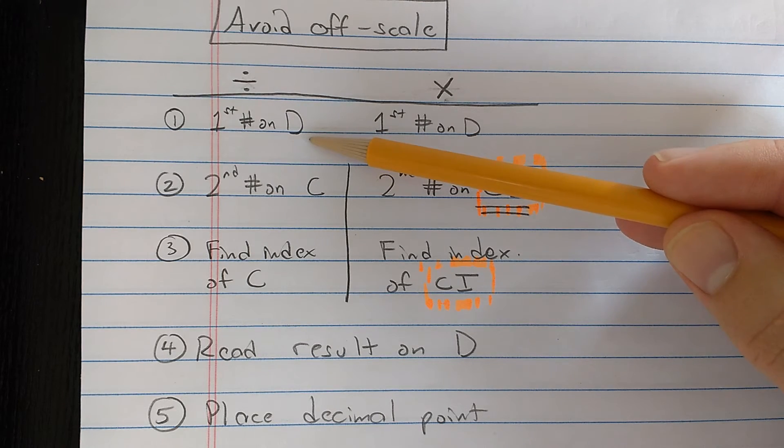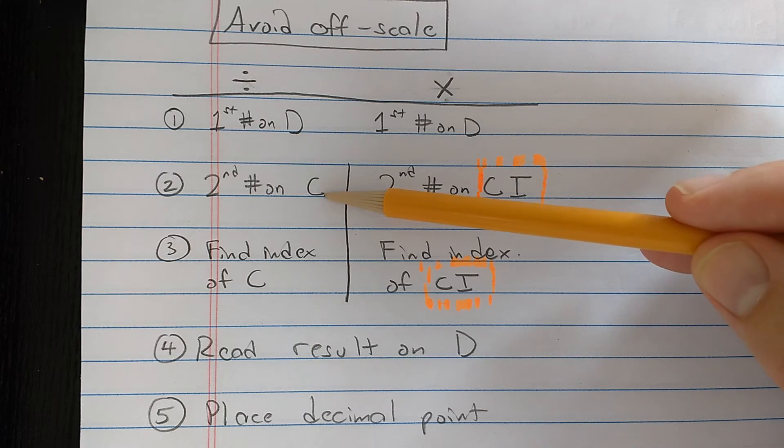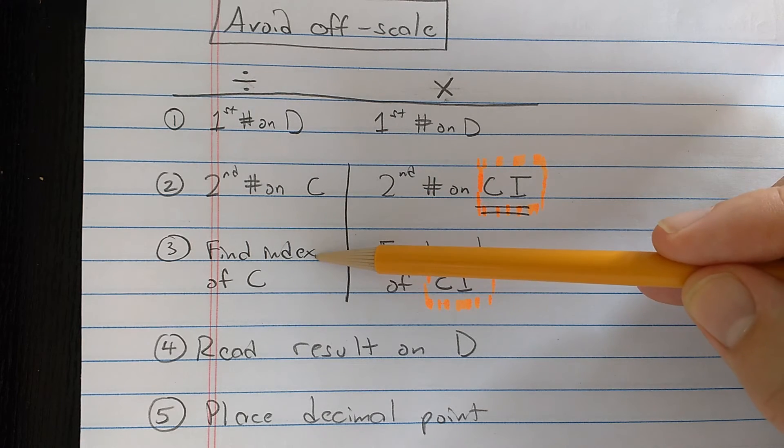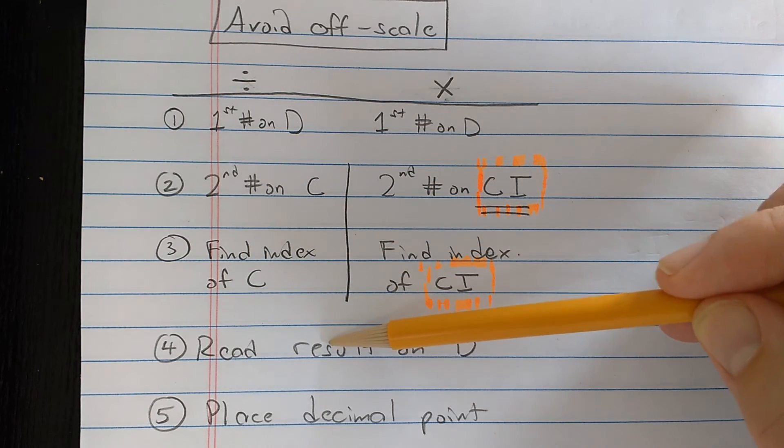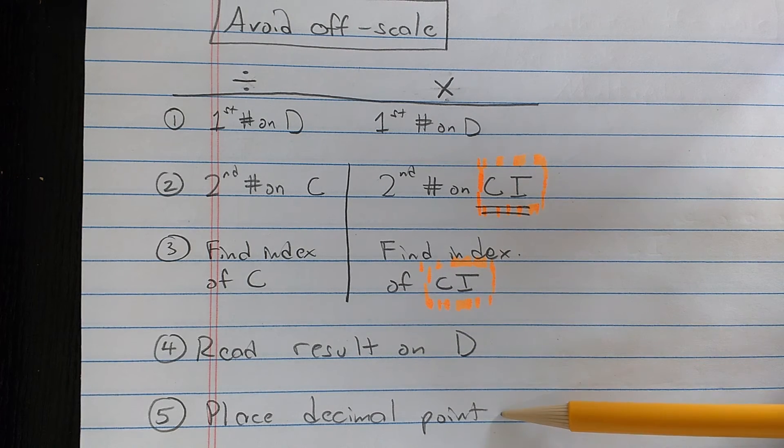So the way that we did it is we found the first number on the D scale, then I aligned that with the second number on the C scale, found the index of the C scale, read the result on the D scale, then placed the decimal point.